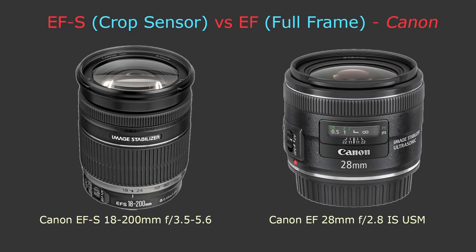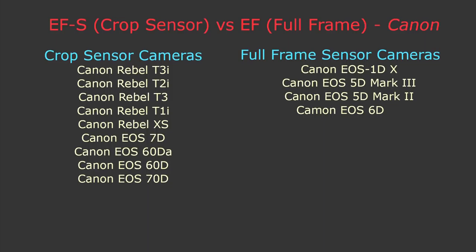Canon also has two types of lenses — one for crop sensor and others for full frame, just using different abbreviations. EF-S lenses are crop sensor lenses and EF lenses are full frame lenses. Unlike Nikon, it's not recommended to put a crop sensor Canon lens on a full frame body because the build of the lens where it connects to the camera is a little different. The main reason Nikon and Canon created crop sensor lenses is to have cheaper and lighter versions, since full frame lenses are heavier and more expensive.